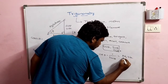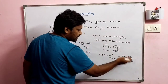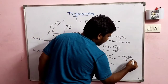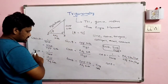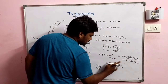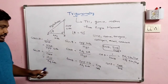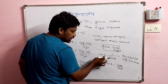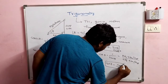Cotangent theta equals adjacent side divided by opposite side. Cot theta equals 1 divided by tan theta. Since tan equals sin by cos, cot theta equals cos by sin. So, cot θ = adjacent / opposite = cos θ / sin θ = 1 / tan θ.